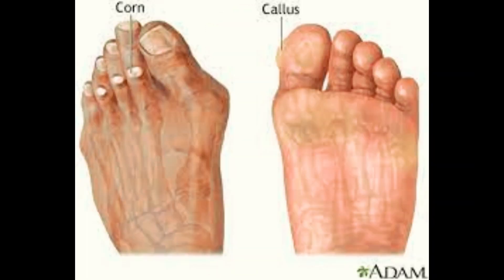6. Calluses and corns. Diabetes can cause abnormal pressure points on the feet due to changes in gait or foot structure. These pressure points can lead to the formation of calluses or corns, which can become ulcerated if not properly managed.